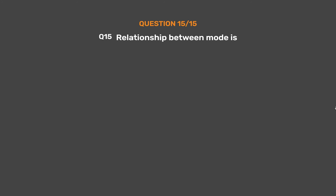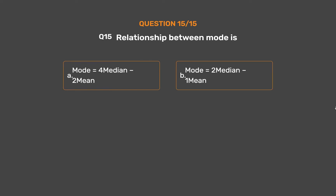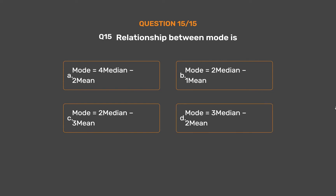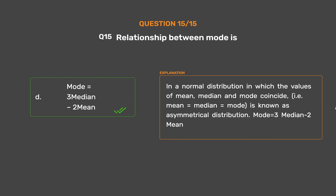Question number 15. The relationship between mode, median, and mean is: Option A: Mode = 4 Median − 2 Mean. Option B: Mode = 2 Median − 1 Mean. Option C: Mode = 2 Median − 3 Mean. Option D: Mode = 3 Median − 2 Mean. In a normal distribution where mean, median, and mode coincide, this is known as a symmetrical distribution. The correct answer is Option D: Mode = 3 Median − 2 Mean.